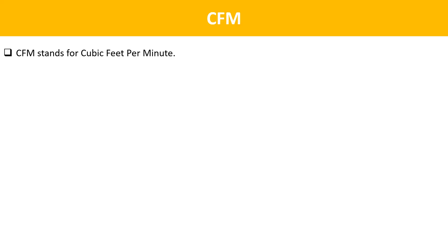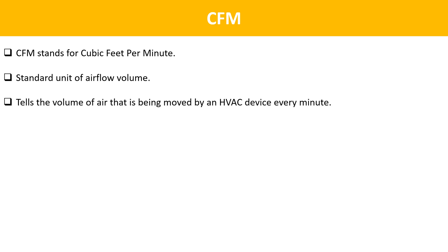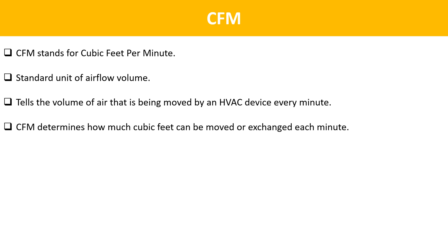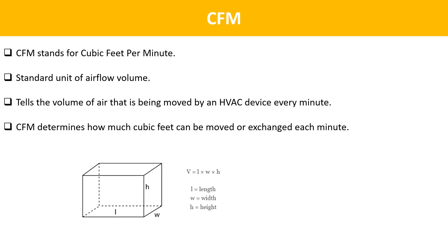The next term is CFM. In HVAC, CFM stands for cubic feet per minute. It is a standard unit of airflow volume that tells you the volume of air being moved by an HVAC device every minute. CFM determines how much cubic feet can be moved or exchanged each minute. A room measuring 1,000 cubic feet would need a 1,000 CFM system to replace all the air each minute.